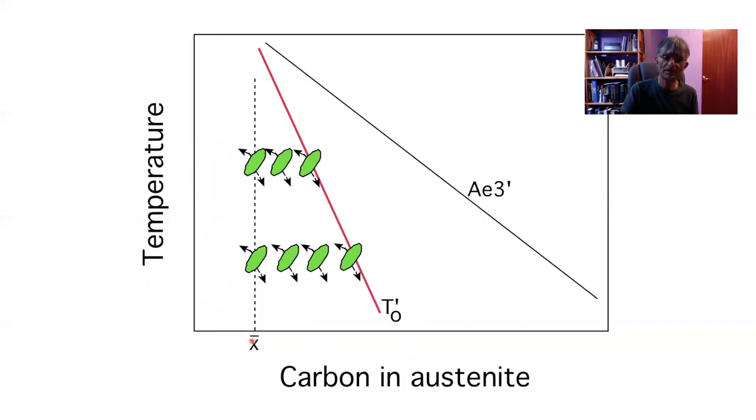We proved that bainite initially grows as a diffusionless plate just like martensite by comparing the point where the reaction stops with the T0 dashed and A3 dashed curves which include strain energies. X bar is just the average carbon concentration of steel. If you form a plate of bainite which is supersaturated with carbon, then shortly afterwards the carbon will partition into the austenite, so the next plate of bainite has to form from carbon enriched austenite and so on until the composition reaches the T0 curve.